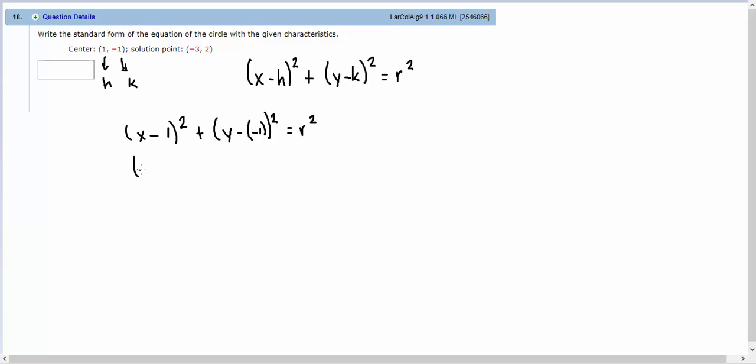So let's simplify this. x minus 1 squared plus, and y minus negative 1 is y plus 1, squared equals r squared.